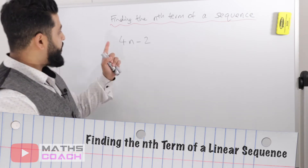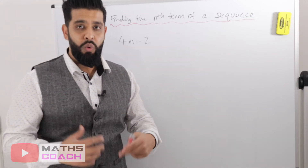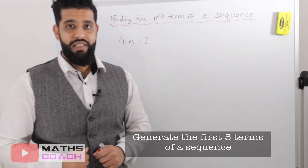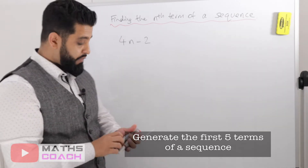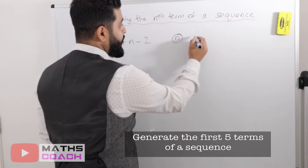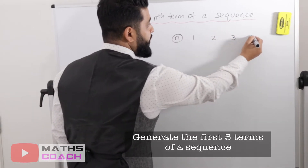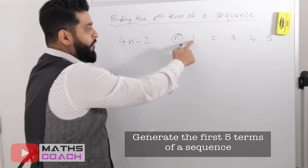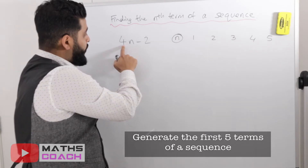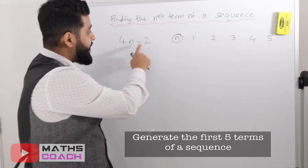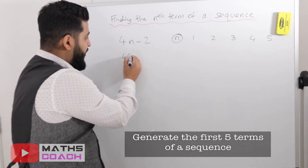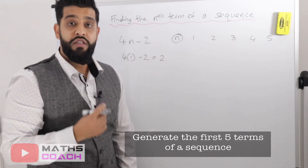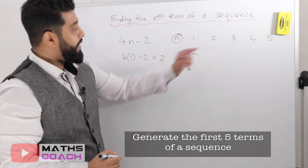For the first question we have 4n minus 2, which is our general rule, and we are going to generate the first five terms of this sequence. The values of n will be 1, 2, 3, 4, and 5. For the first term we put in 1, so we do 4 times 1 which is 4, then take away 2. That gives us 2, so the first term is 2.